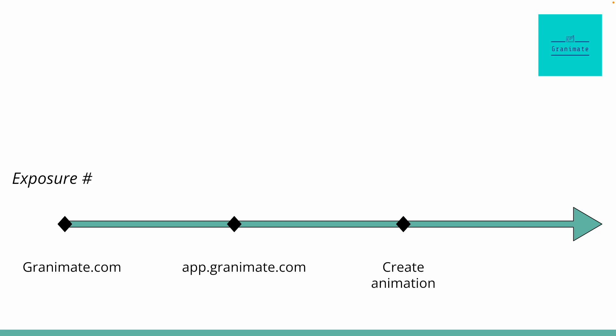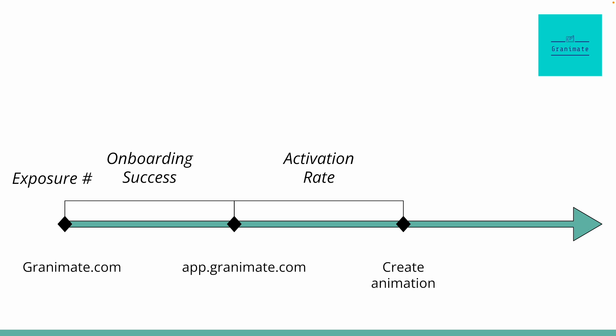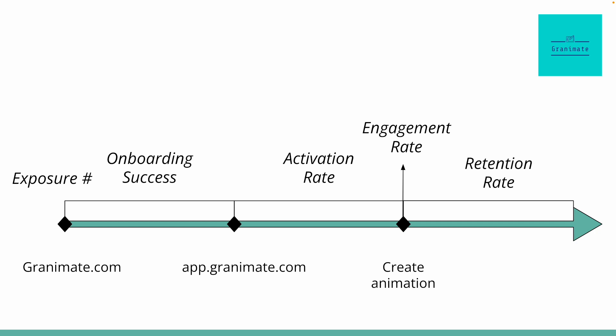Now let's lay out the metrics. Exposure is the number of users who arrive at granimate.com. Onboarding success is the number who completed onboarding divided by those who started it. Activation rate is the number who create an animation divided by those who completed onboarding. Engagement rate is the number of animations created per active user — the more animations each user creates, the more engaged they are. Retention rate is the percentage of people who create an animation 90 or more days after they activate; I went with 90-day retention because this is a professional product where users likely stick around longer. And for the focus metric, since it's a professional product used more on weekdays, it follows a weekly cyclical pattern, making weekly active users the right choice.